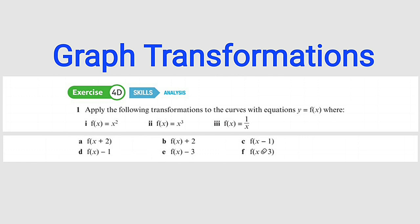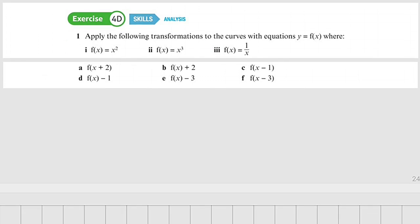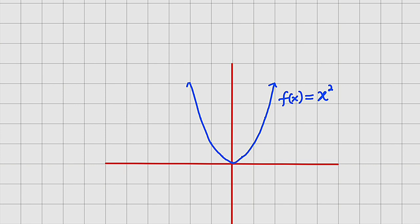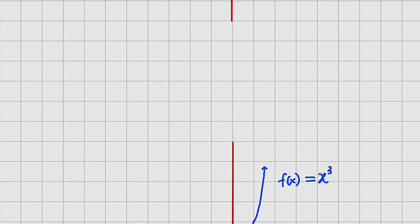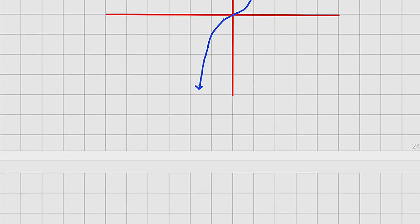We are given six different transformations here — three vertical shifts and three horizontal shifts. We are going to pick one horizontal and one vertical for each question, because we have three mother functions given to us: x squared, x to the power of 3, and 1 divided by x. I have already constructed their respective graphs.